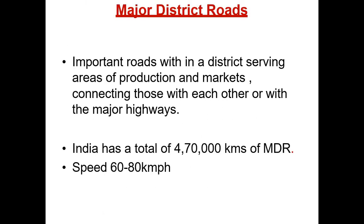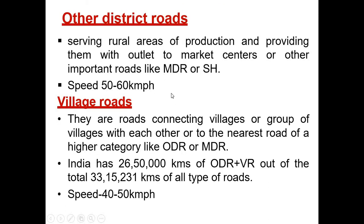Major district roads are important roads within a district, serving areas of production and markets, connecting those with each other or with major highways. India has a total of 470,000 kilometers of major district roads and the speed limit is 60 to 80 kilometers per hour. Other district roads serve rural areas of production, providing them with outlets to market centers or other important roads like major district roads or state highways, and the speed limit is 50 to 60 kilometers per hour.